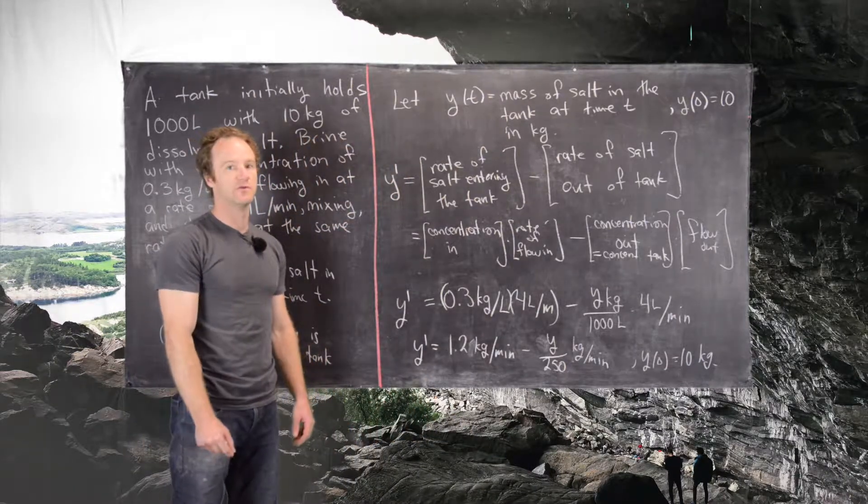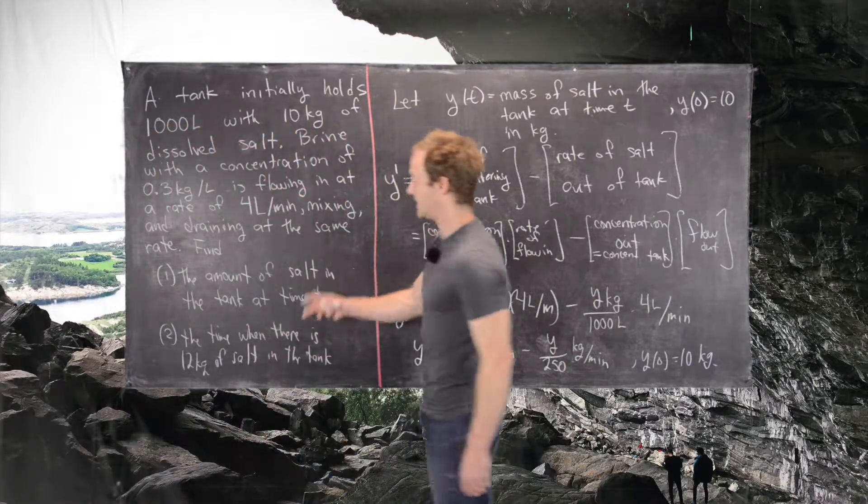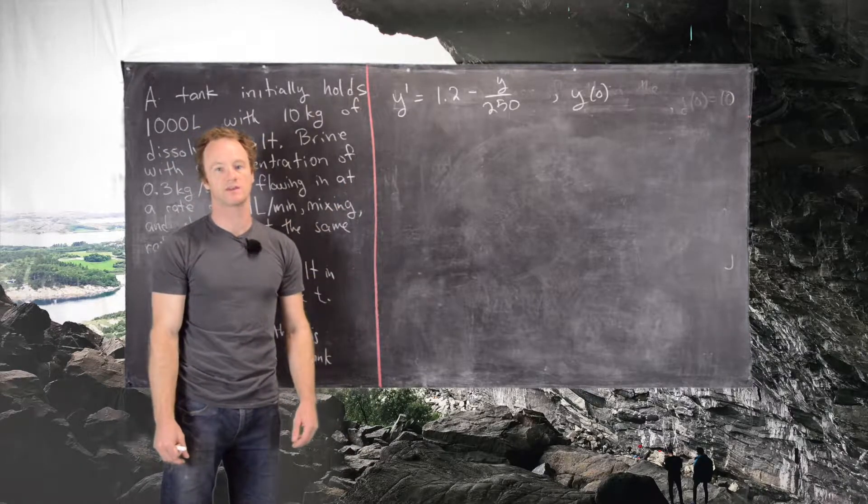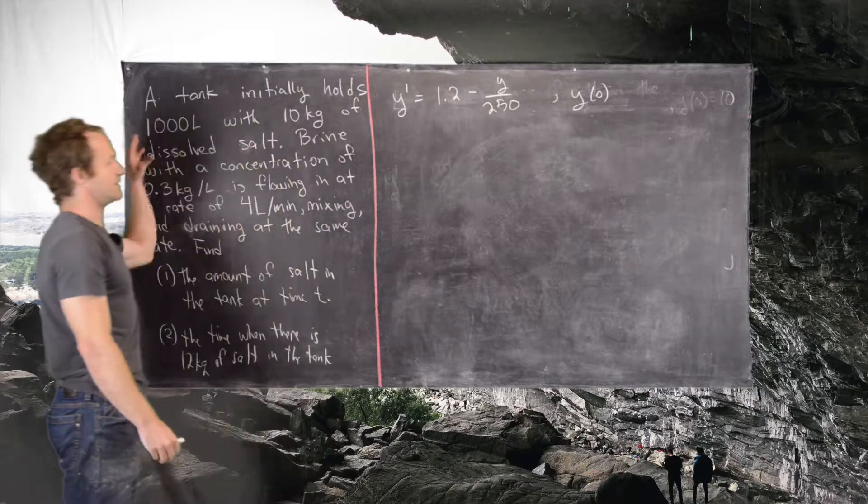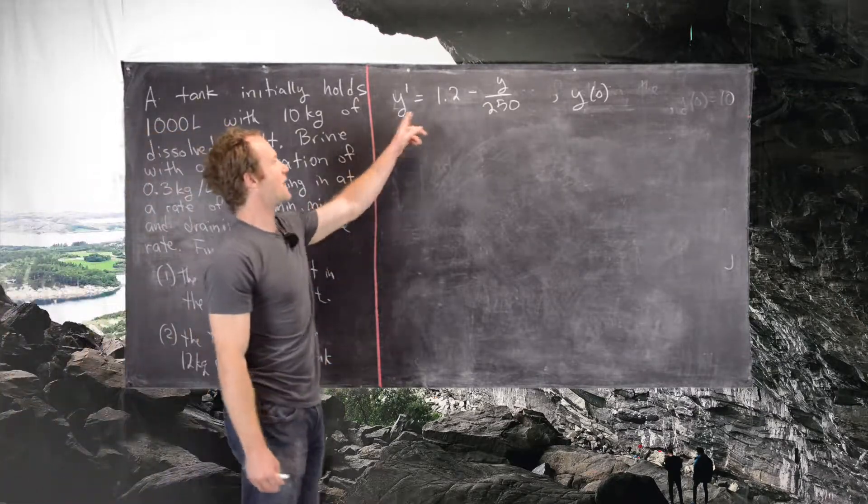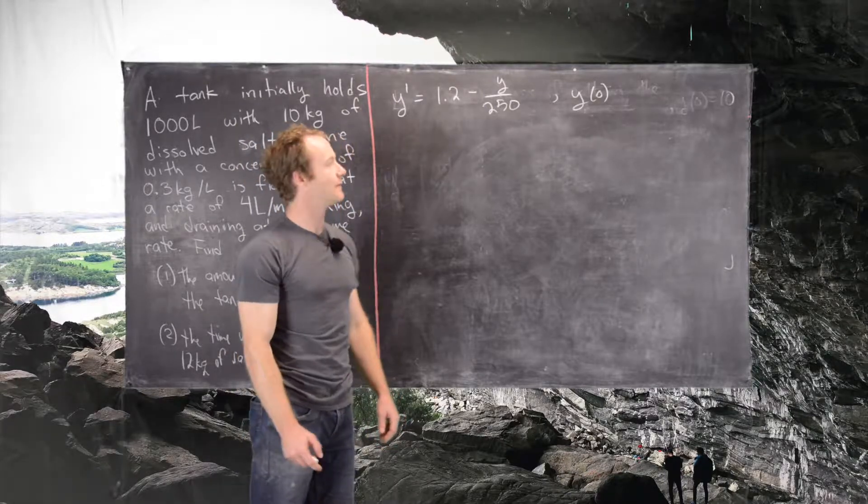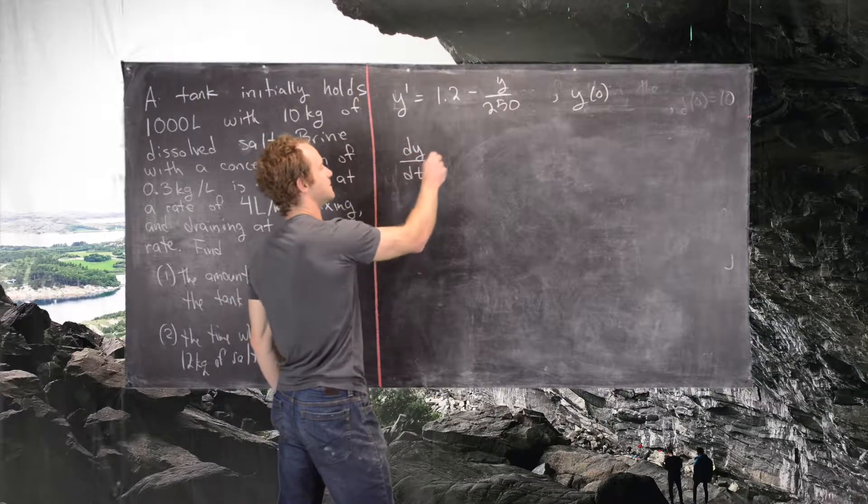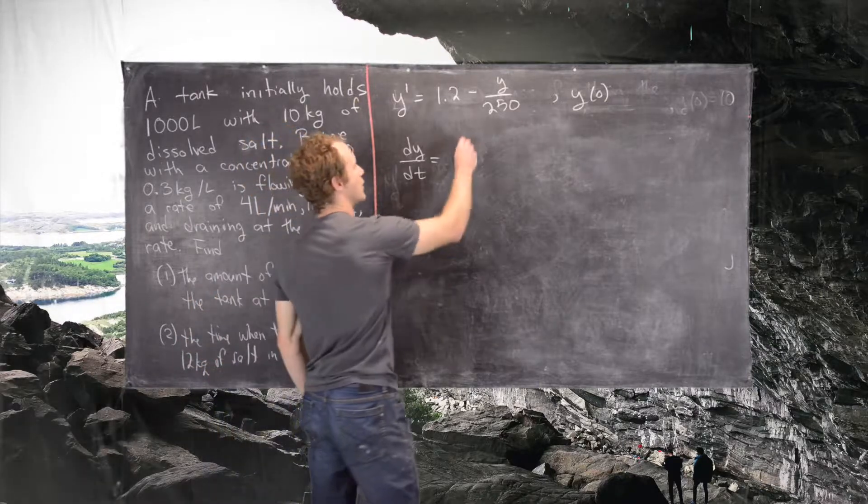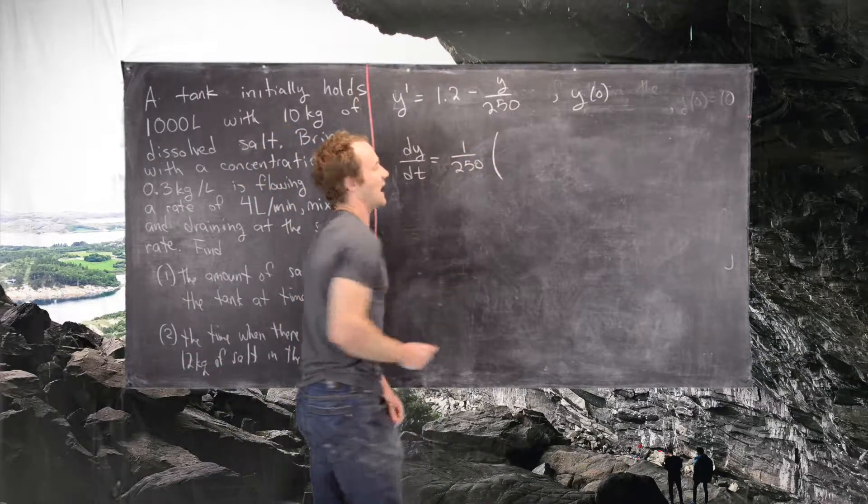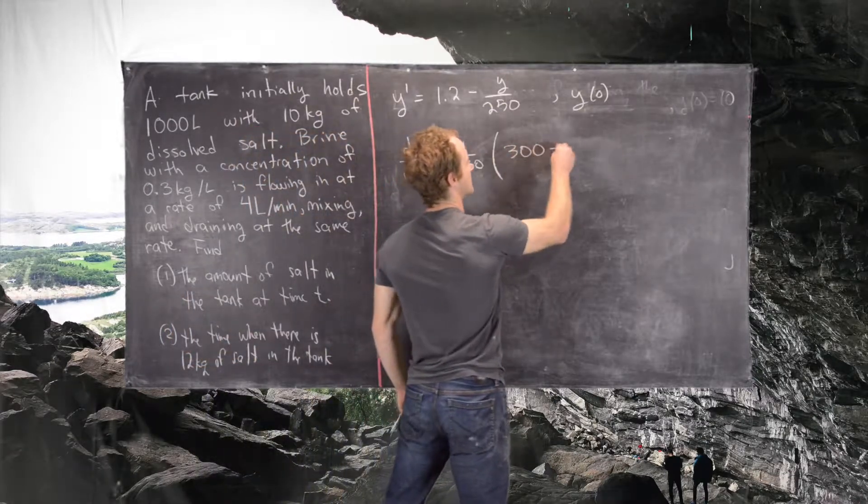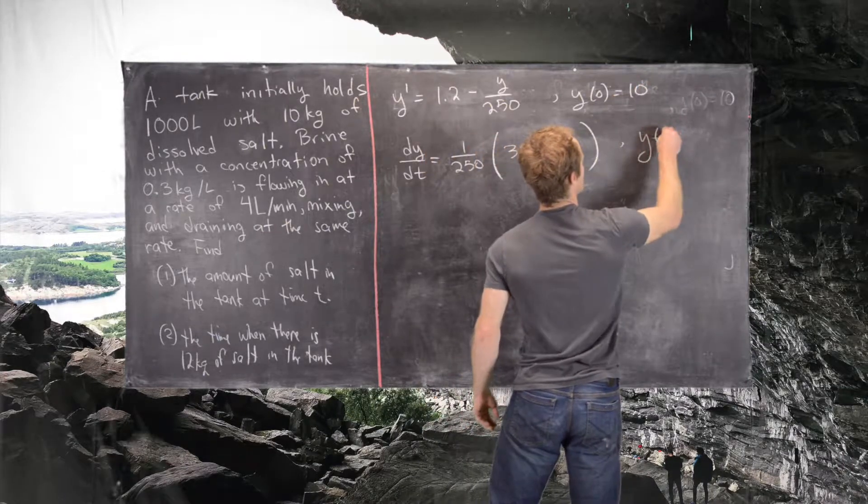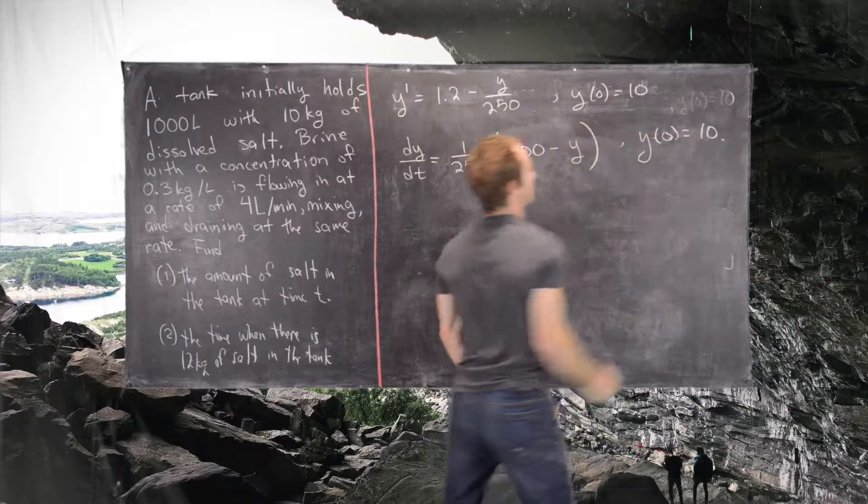Now that we have a differential equation, we'll move on to solving this differential equation. Previously we constructed the differential equation which models the mass of the salt in this mixing problem. We have y prime equals 1.2 minus y over 250. I'm going to write this as dy by dt equals, and now we can factor out a 1 over 250, and then write this thing as 300 minus y. Again, we have y of 0 equals 10.